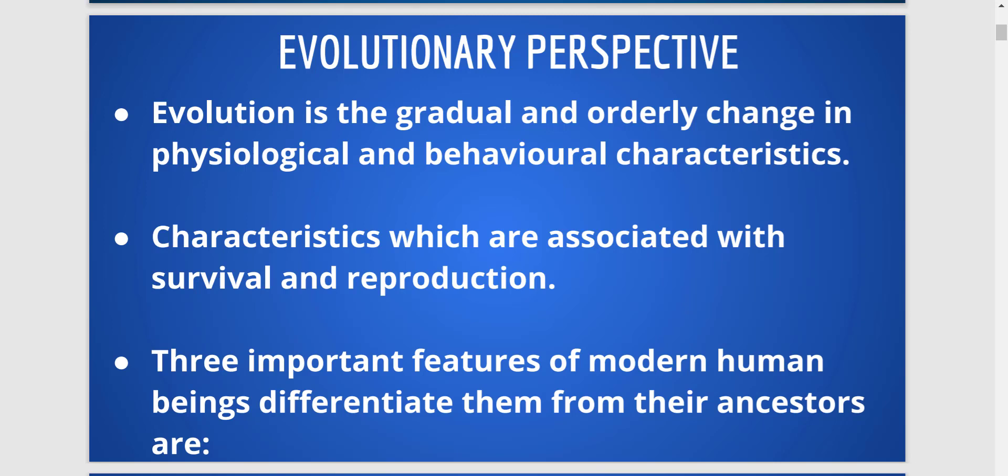For example, the ability to avoid predators, the ability to find food, the ability to defend our young ones — these are certain characteristics and abilities which are usually associated with our survival and reproduction, and passing on the genes from one generation to another.